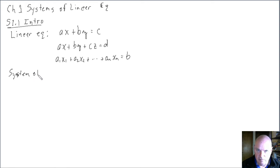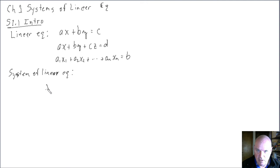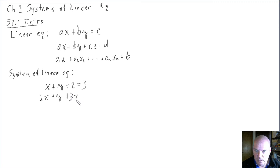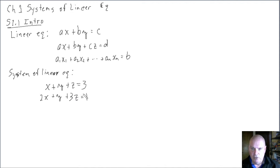So what's a system of linear equations? An example would be — using numbers — x + y + z = 3, and then a second equation relating x, y, and z: 2x + y + 3z = 1. Multiple equations like this form a system of equations.